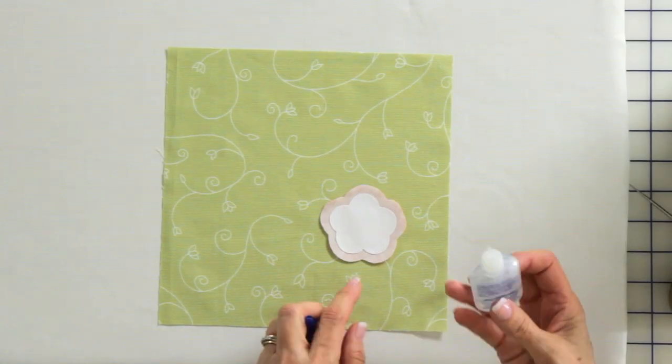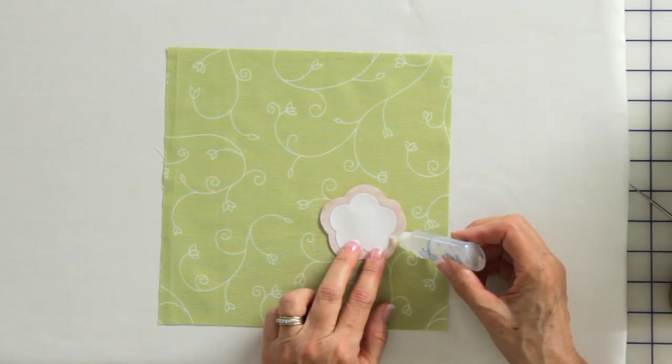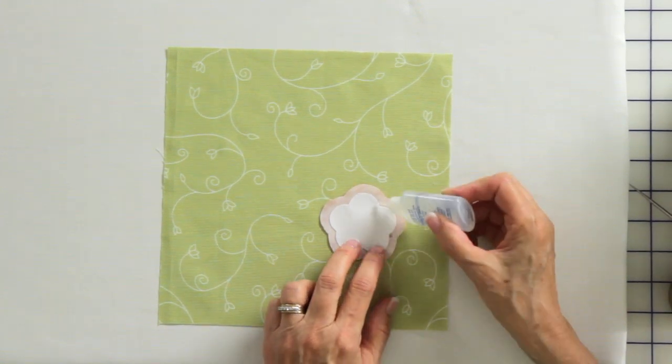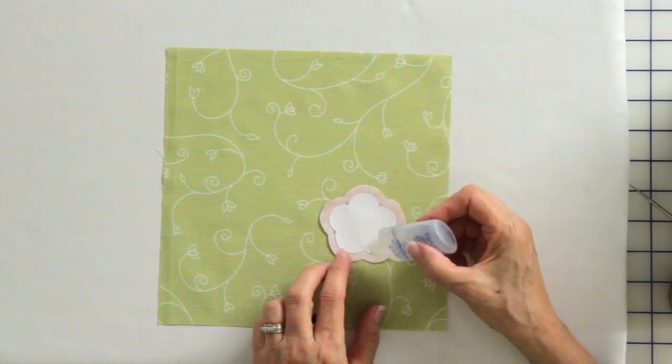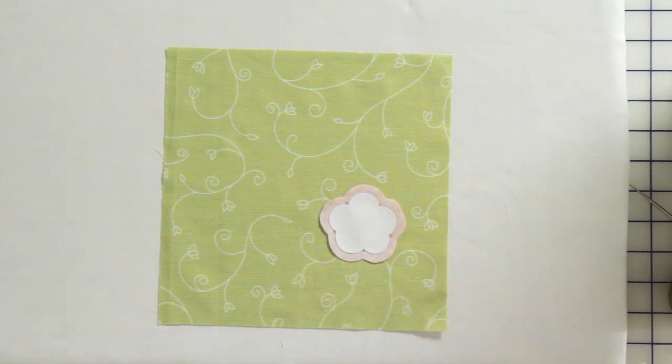Now I'm ready to apply the fray check and I put just a little drop here, just at the divot right where the inside point is. You're just putting a very tiny dot. We don't have to wait for that to dry, we can go ahead and snip now.